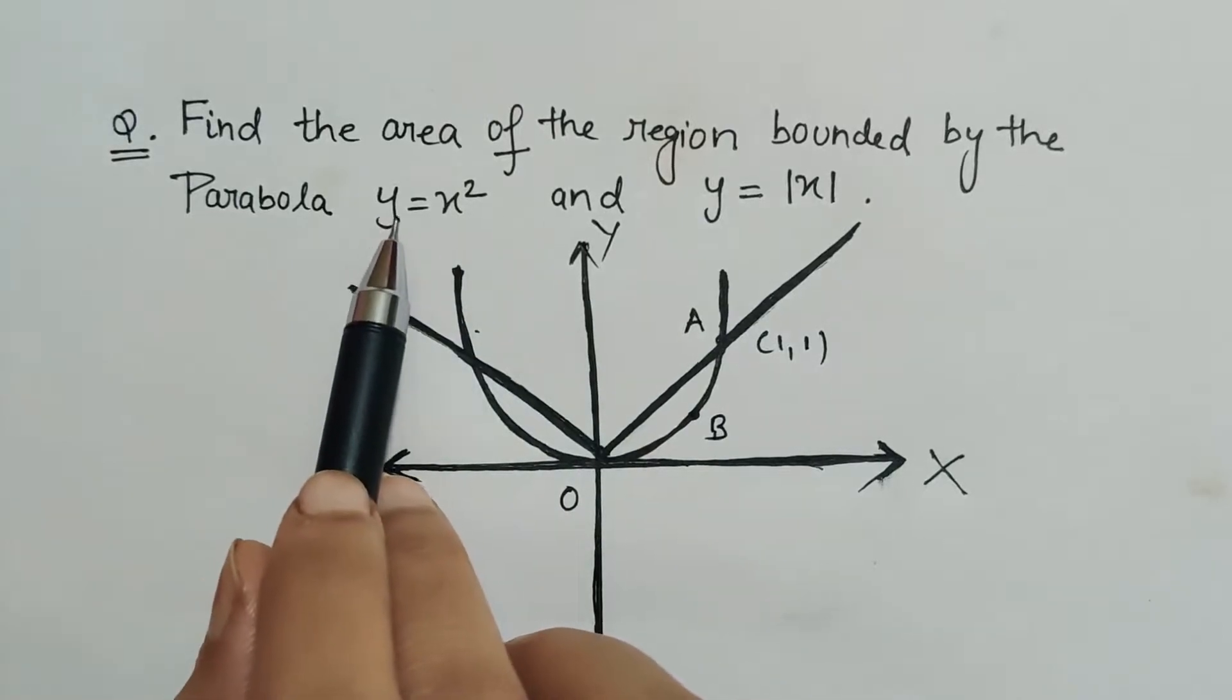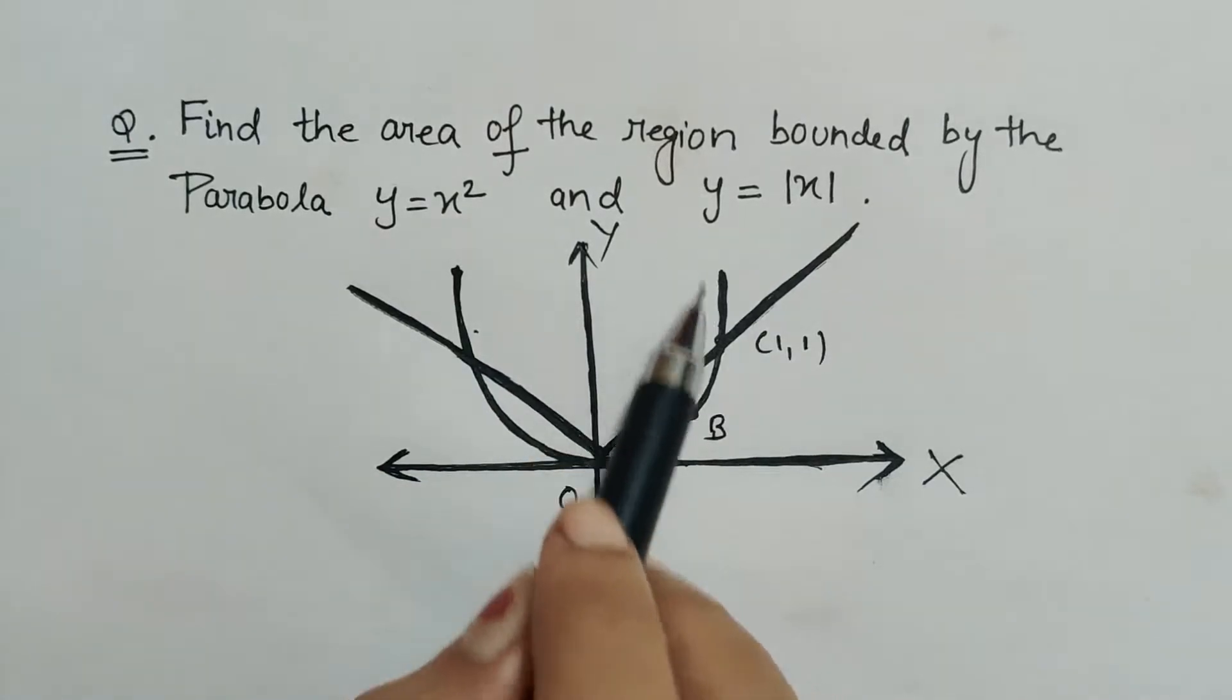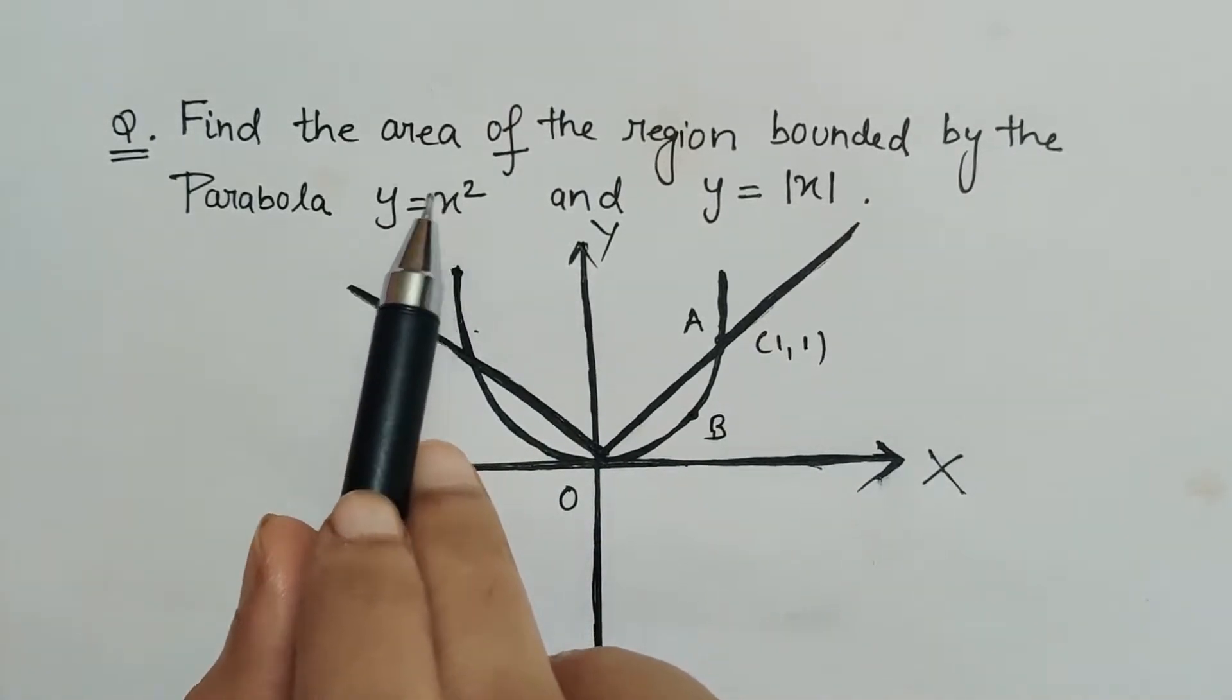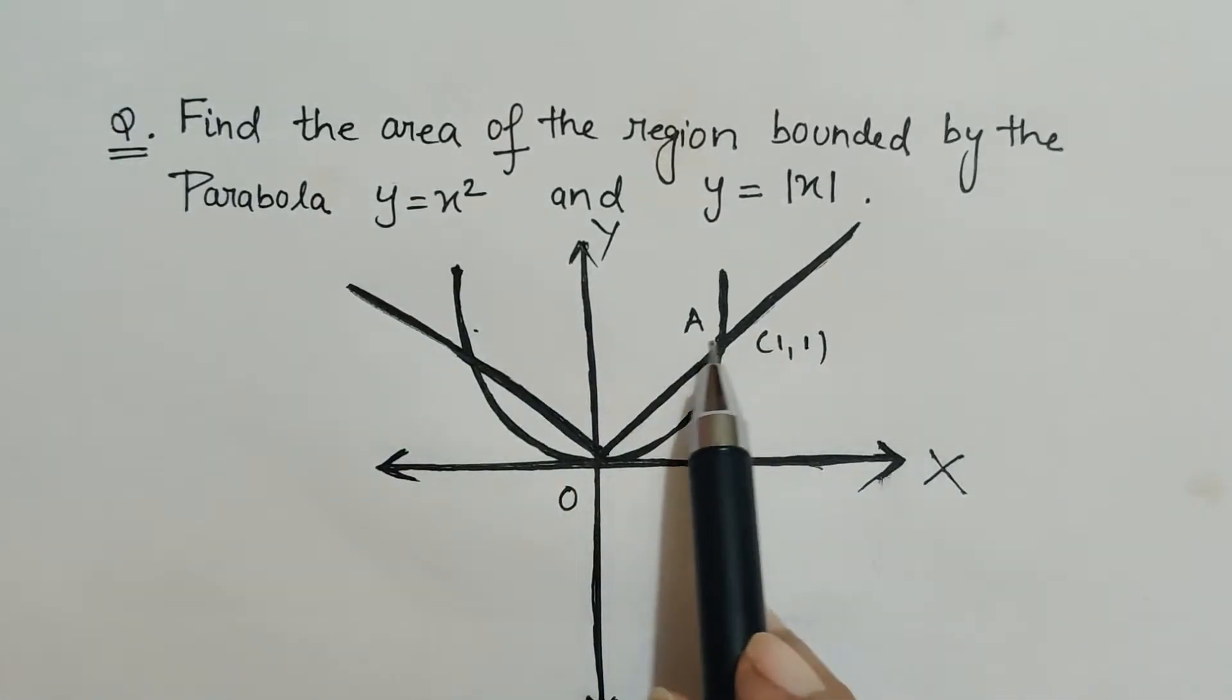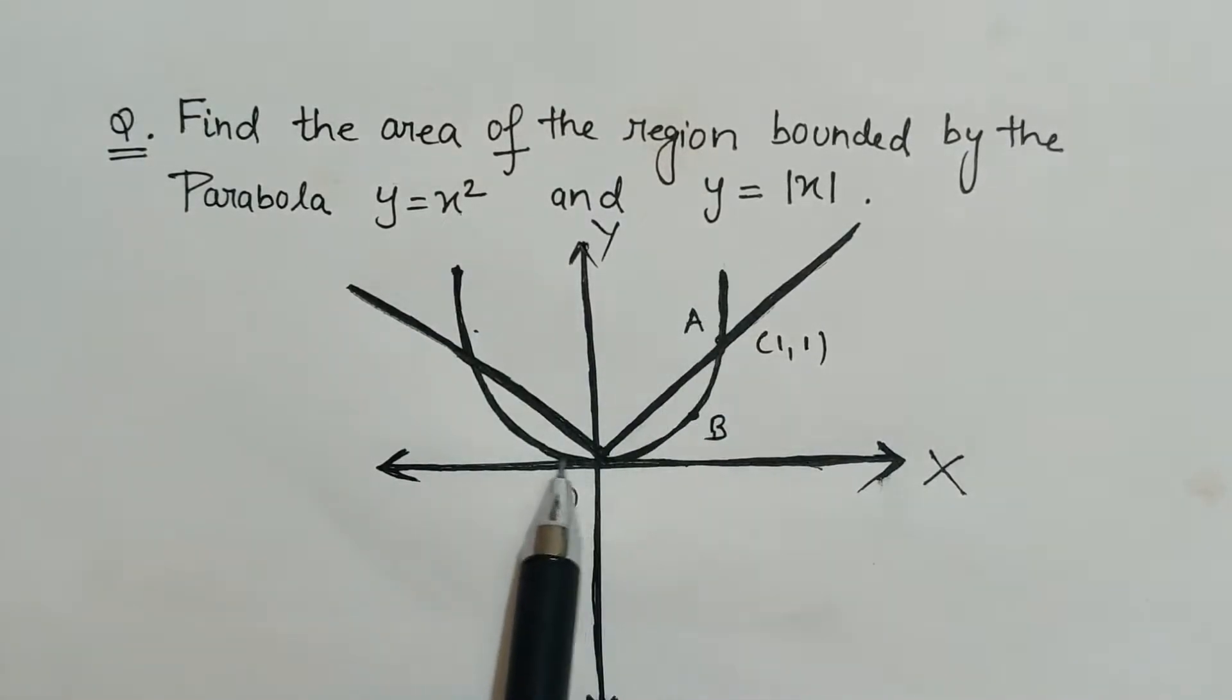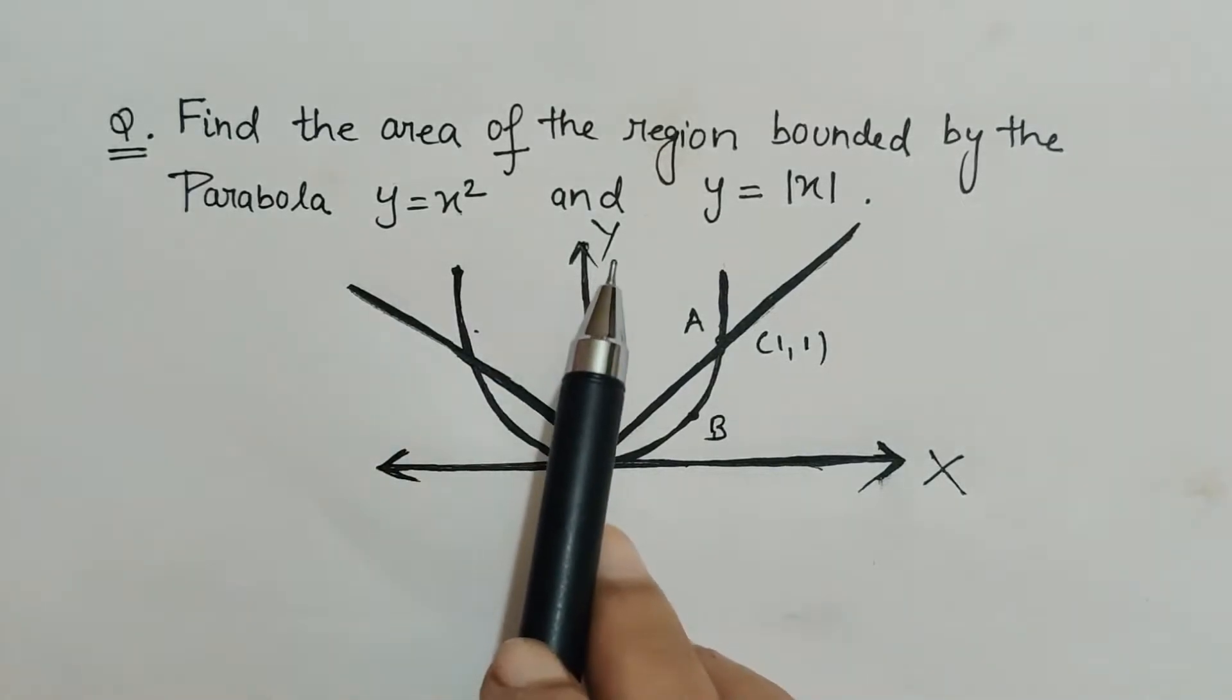So as we can see, y equals x square. Whenever it is x square, that means the parabola is symmetric along y-axis. Had it been y square, that is x equals y square, then the parabola would have been symmetric along x-axis. So here it is x square, so the parabola is symmetric along y-axis, and as the sign is positive, it is in the upward direction.